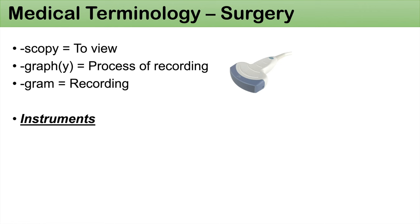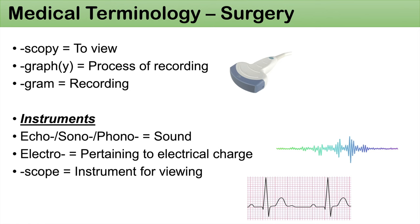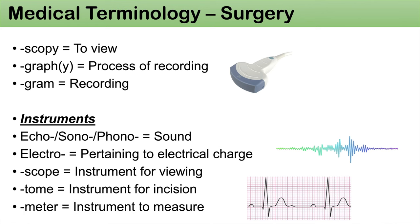Now we'll look at surgical instruments and diagnostic instruments. The prefixes echo-, sono-, and phono- all denote sound — think of echocardiogram. Electro- means pertaining to electrical charge — electrocardiogram again. A scope itself means an instrument for viewing, while -scopi was to view. The suffix -tome means an instrument for incision. The suffix -meter means an instrument to measure — think of thermometer.